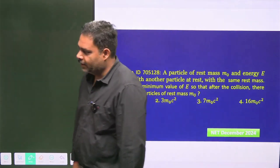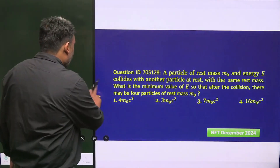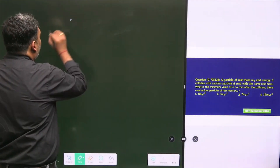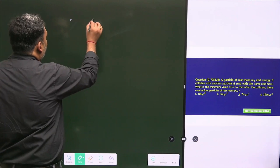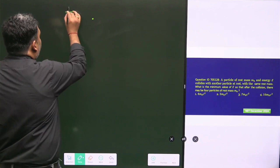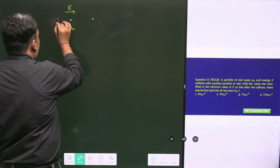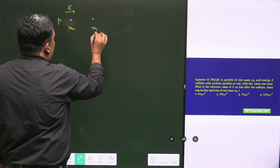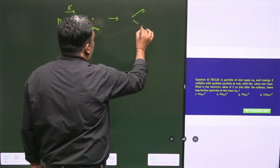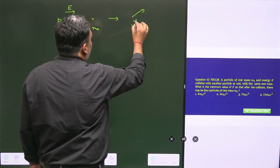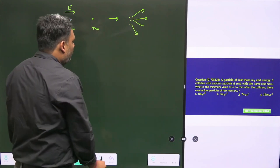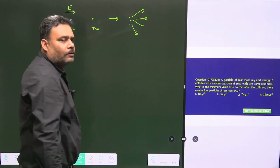In this problem, we have a particle of mass m₀ and another particle also of mass m₀. The first particle has rest mass m₀ and energy E with momentum p, while the second particle is at rest with rest mass m₀. After the collision, four different particles can be generated, all with rest mass m₀. This type of problem is solved with the concept of four vectors.